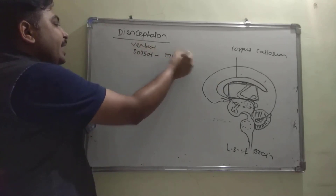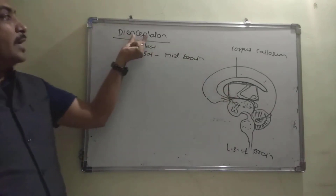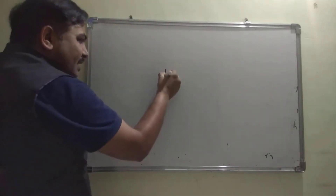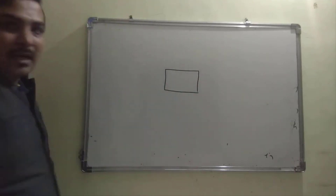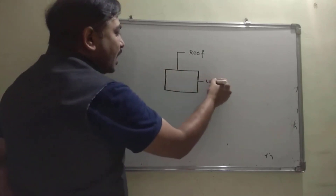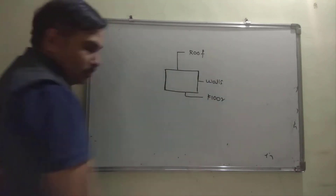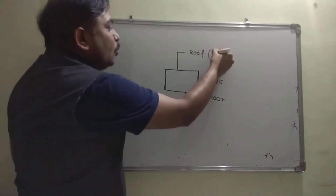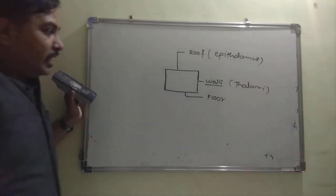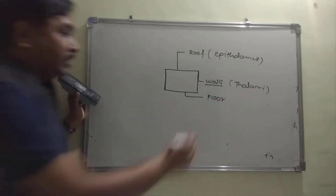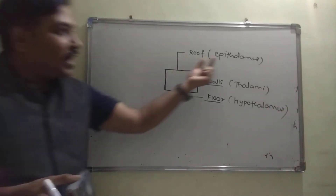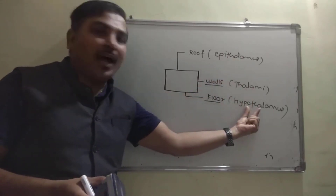The roof of the diencephalon is called the epithalamus, the side walls are called the thalami (singular: thalamus), and the floor is called the hypothalamus. So the diencephalon is divided into three parts: epithalamus, thalami, and hypothalamus.